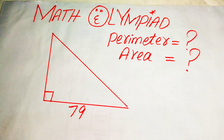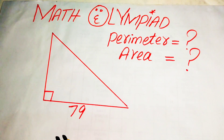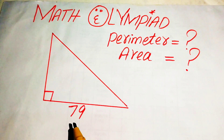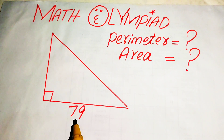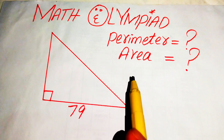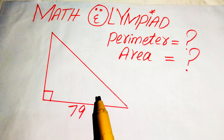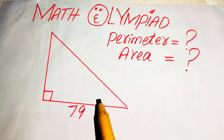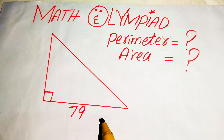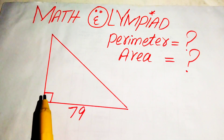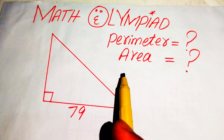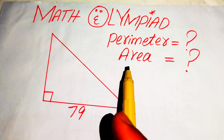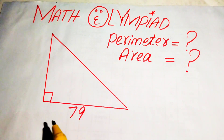Hello everyone, welcome. We'll solve this Matholympiad geometry problem. We have a right triangle in which the length of one side is 79, and we need to find the perimeter and area of this right triangle. First, we'll find the length of the other two sides, then move towards finding the perimeter and area.